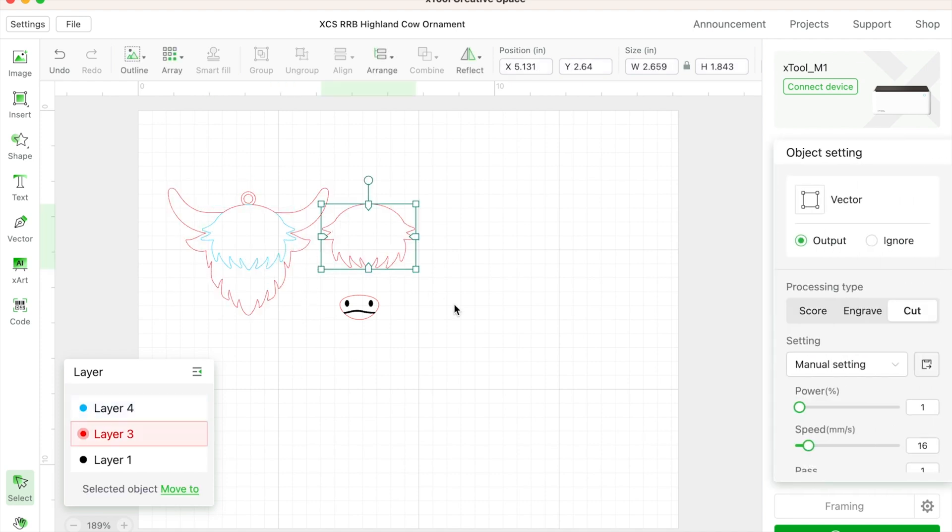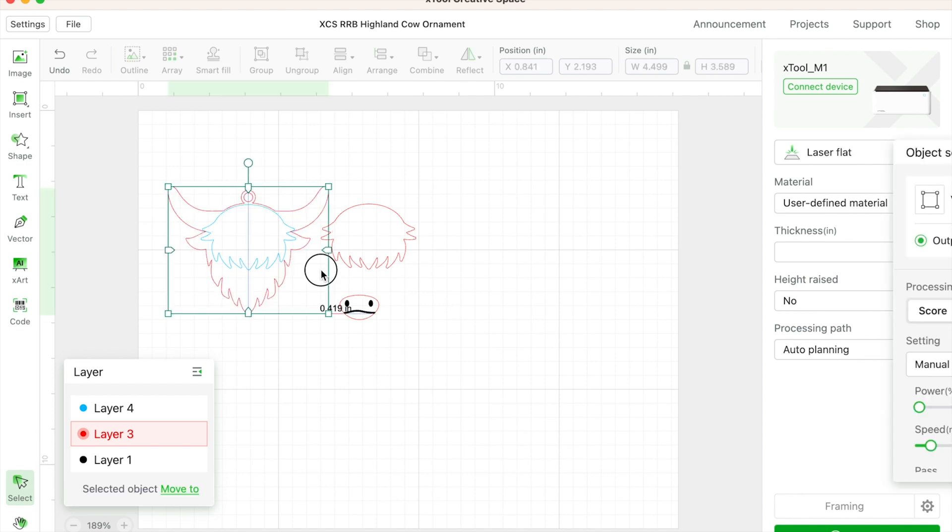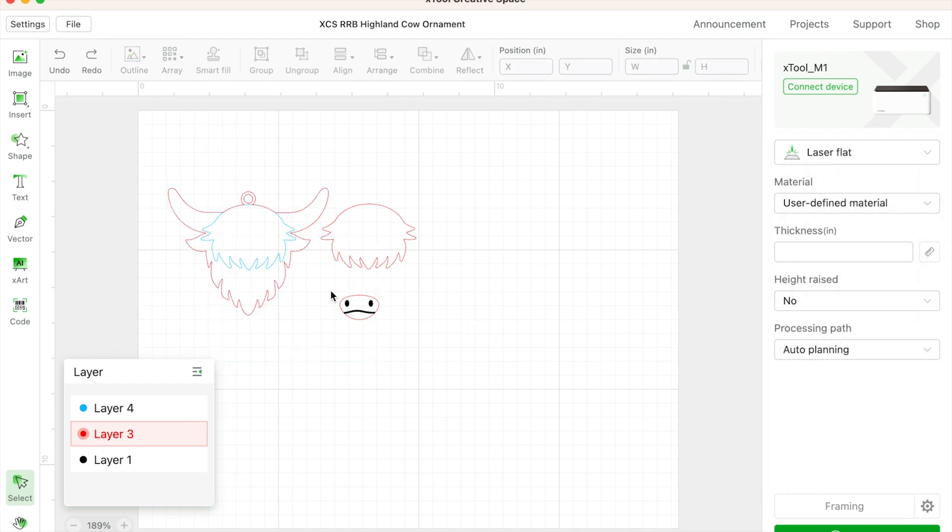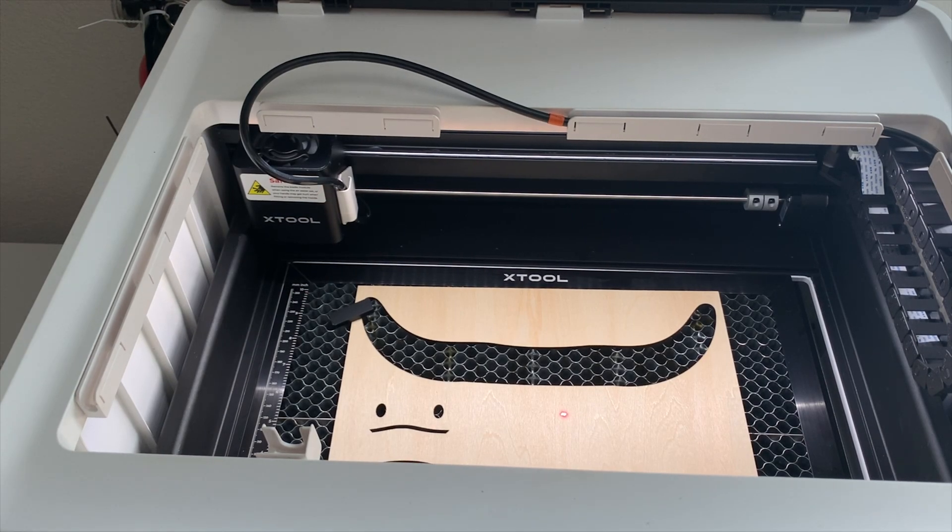Alright, so now that we have our piece, again I'm going to ignore it, but if you're not ignoring it, here's what your file will look like. You can score one piece of the hair, copy and paste it and cut the other piece out of wood. You want the score piece to stay over and positioned like it would be on top of each other.